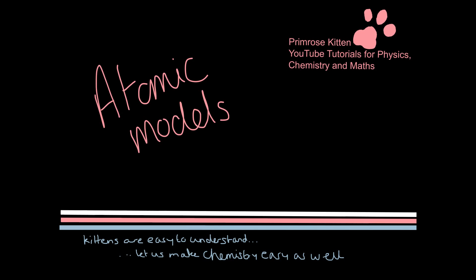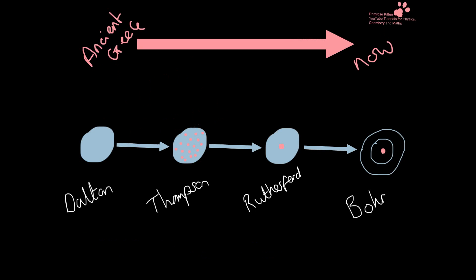Here we're going to be talking about the different models of the atom that have gone throughout history. Atomic models have a really long history, starting off in ancient Greece, going through to now and to the future. We're going to be looking at Dalton's, Thomson's, Rutherford's, and then Niels Bohr's models.